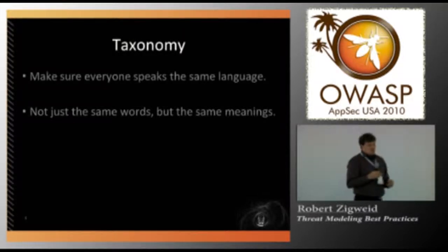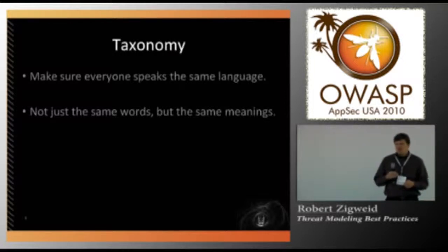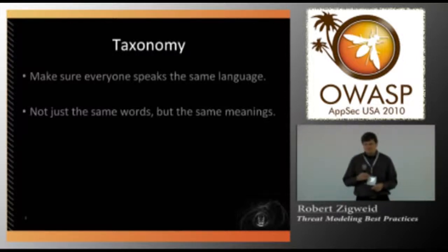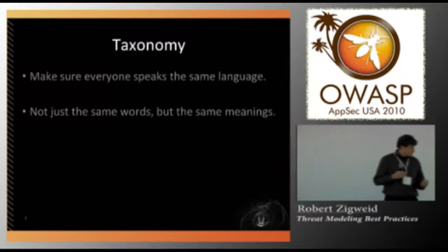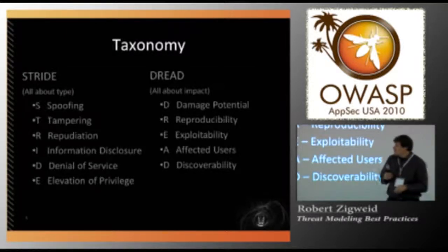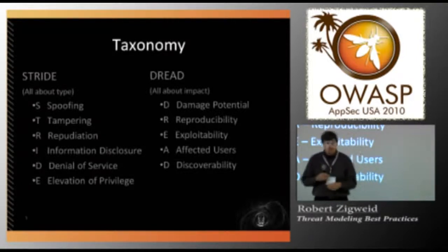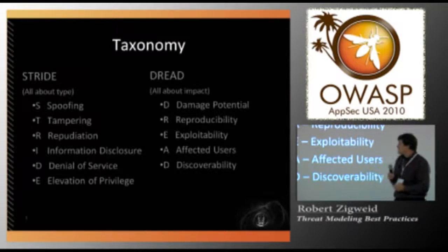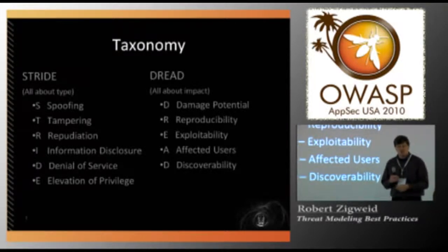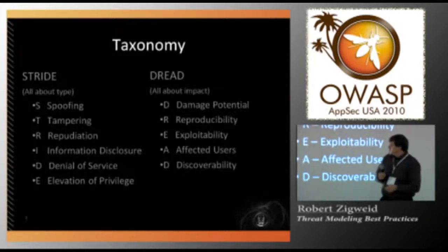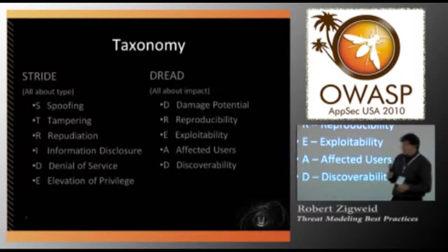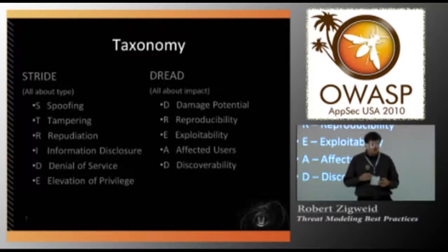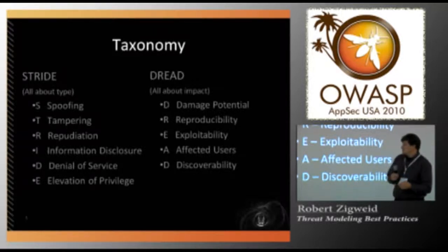Speaking the same language is very, very important — it lets you create a unified message that anybody in your team can understand. I'm sure many of you have seen these words before. This is one of the more common, probably the most popular taxonomy right now. This comes out of Microsoft — they're STRIDE and DREAD. STRIDE is all about the type of threat, and DREAD is all about how that threat has an impact. It also can translate into vulnerabilities.